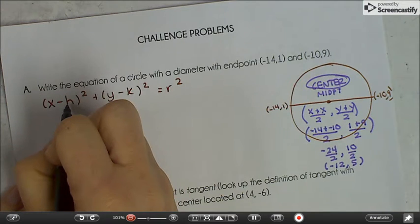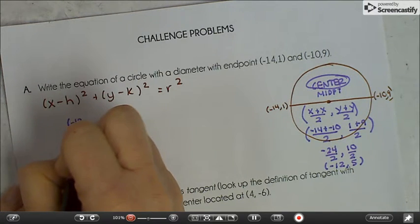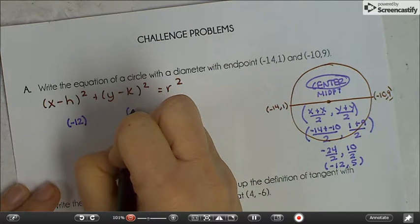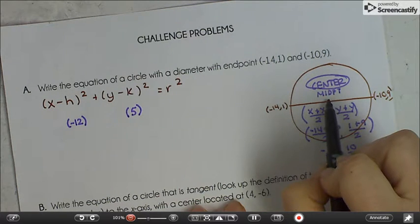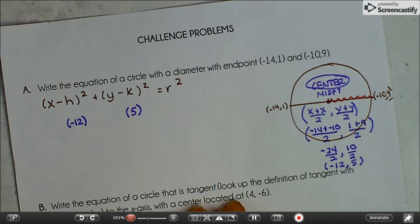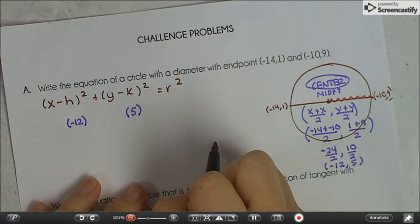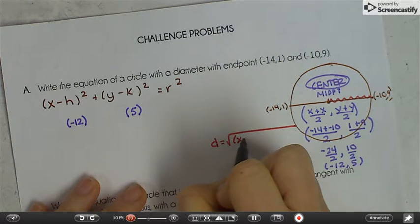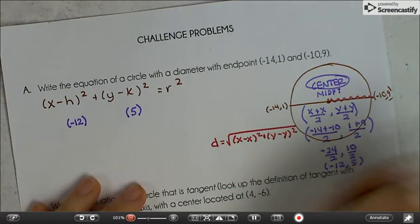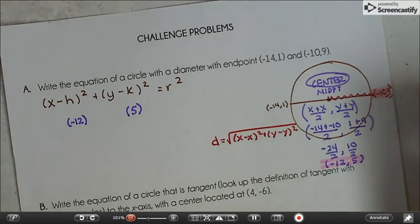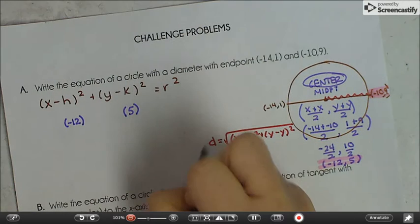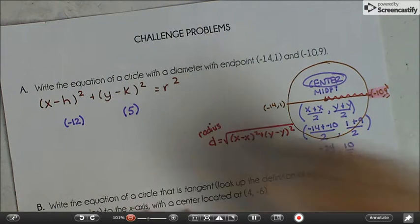So now we have h, which is negative 12, and we have k, which is 5. All right. Then we have a couple options. The thing that I'd like to do that just popped into my head is to find the radius. We need the distance, because remember it's a distance, from here to here. So for distance, we can use the distance formula. And I'm going to use the center coordinate and one of the endpoints to find the radius.